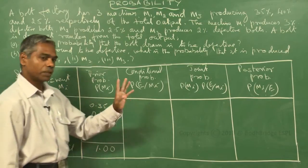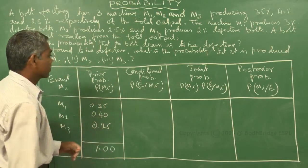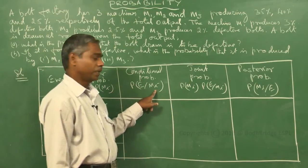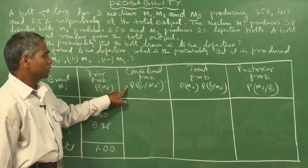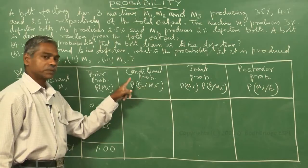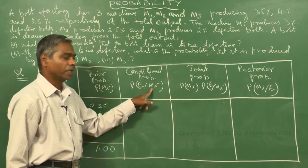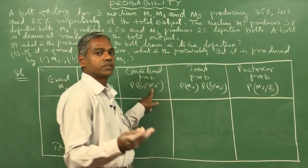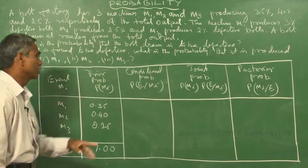Now come to the conditional probability — that is P(E | Mi) — the probability that the bolt chosen is defective, given that it is produced by machine M1, M2, or M3.